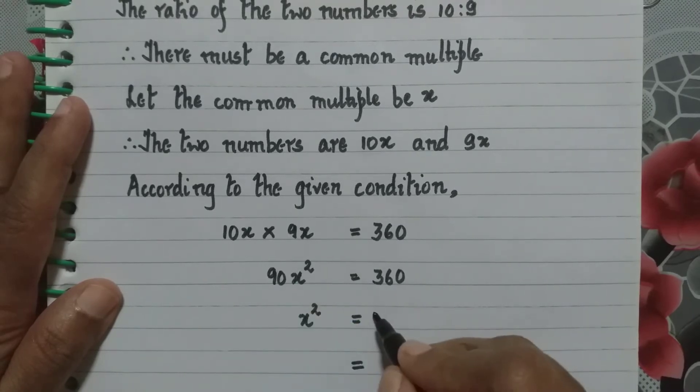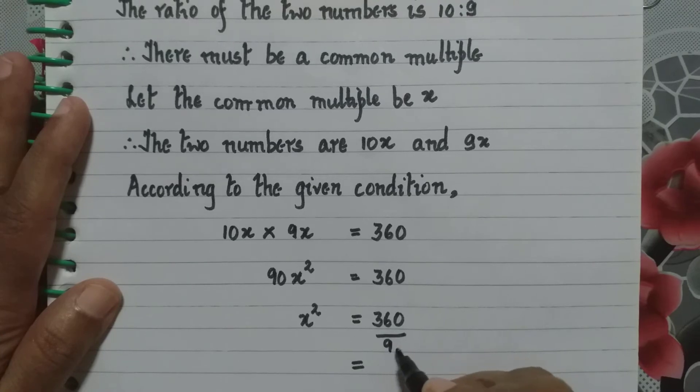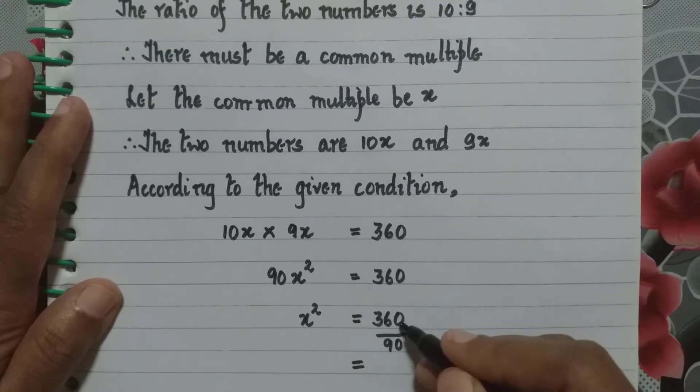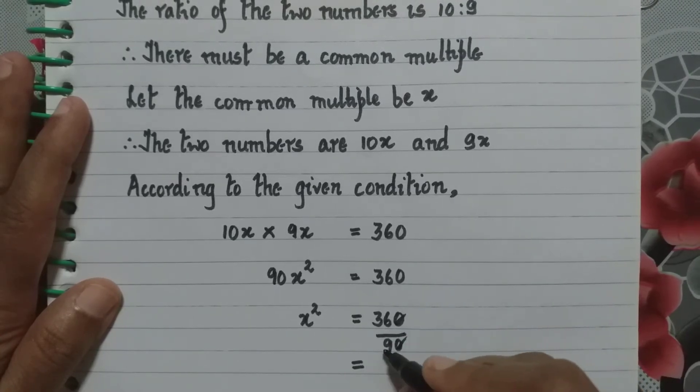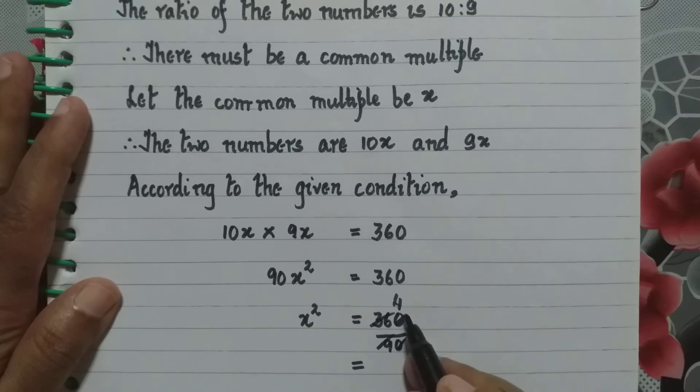So x square is equal to, we take 90 on the other side, 360 divide by 90. Now what happens? 0 and 0 cancel, 9 goes in 36 four times. So we have x square is 4.